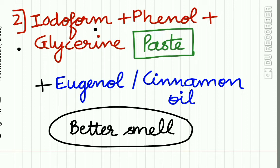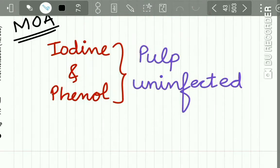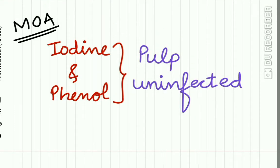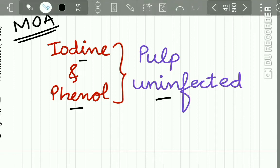The second mummifying agent was a combination of iodoform and phenol with glycerine, combined together to form a paste. Eugenol or cinnamon oil was added to improve the smell. The mechanism of action was that the presence of iodine or phenol made the pulp uninfected.